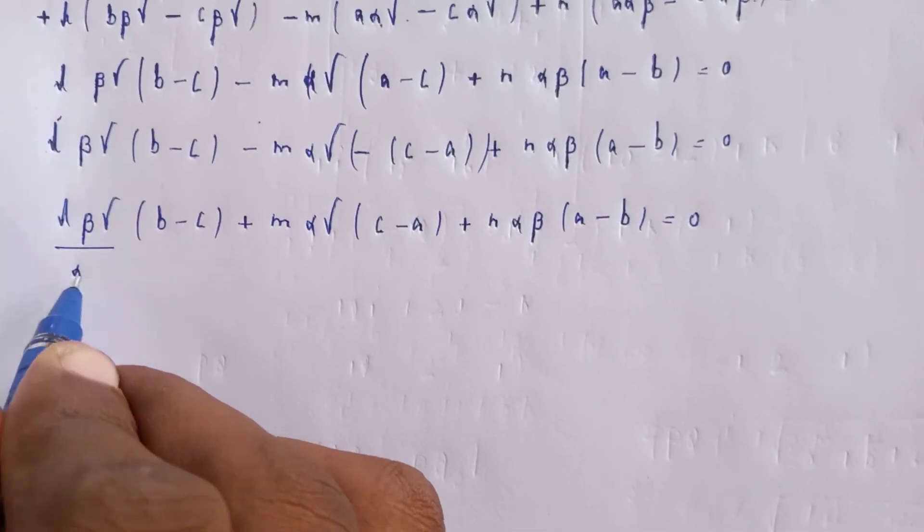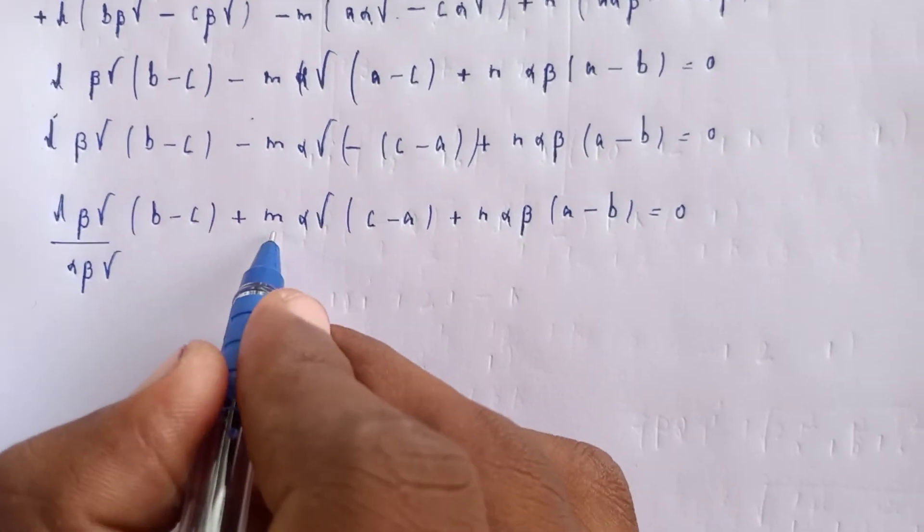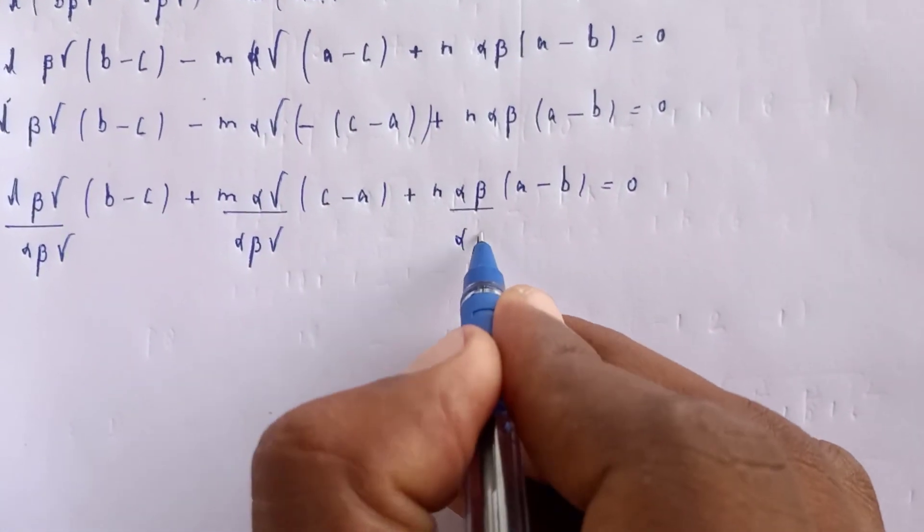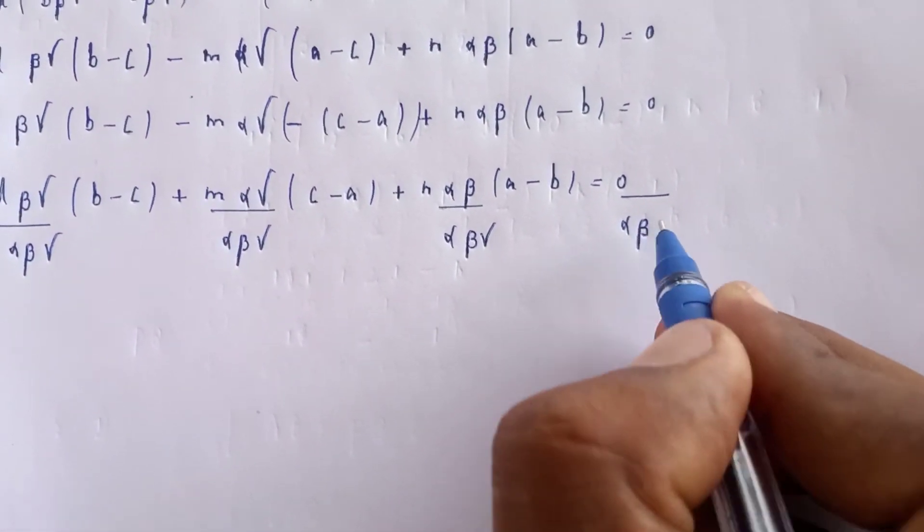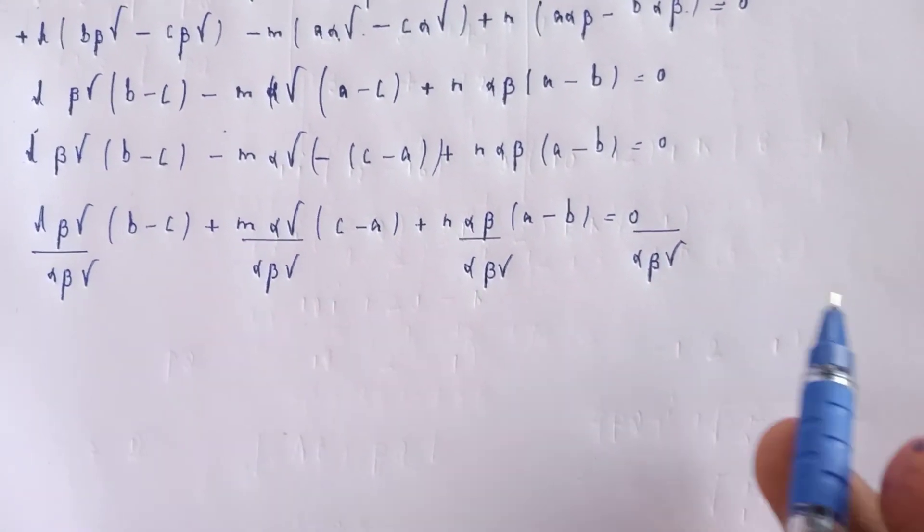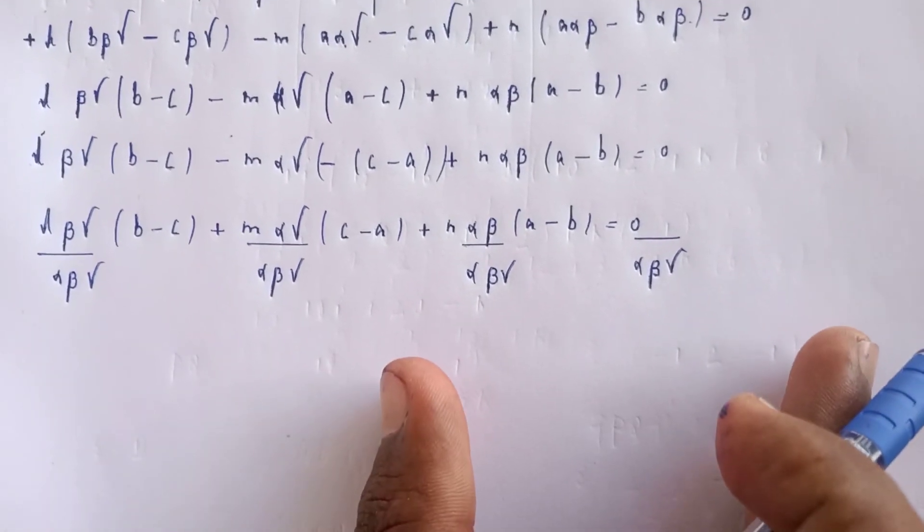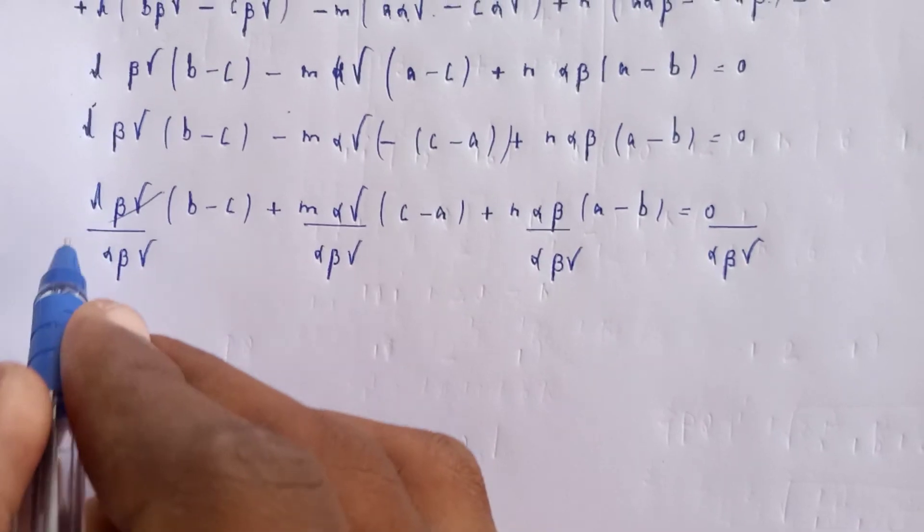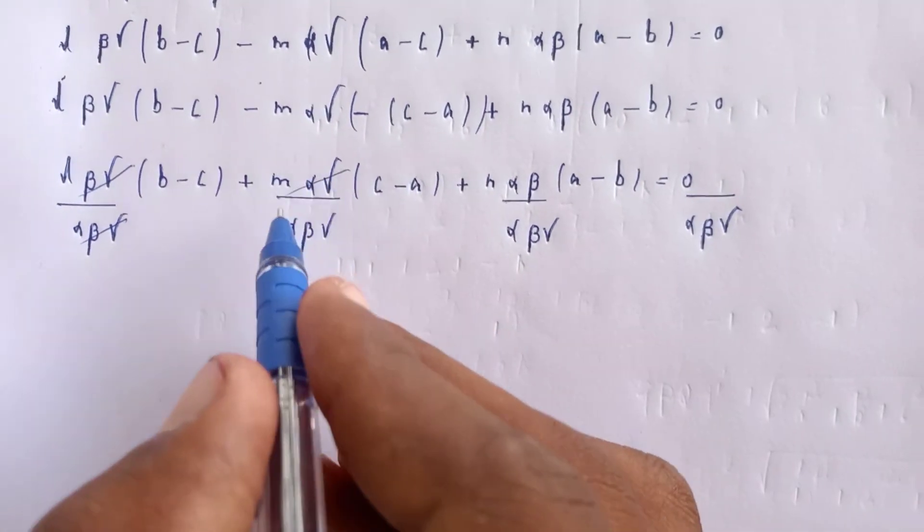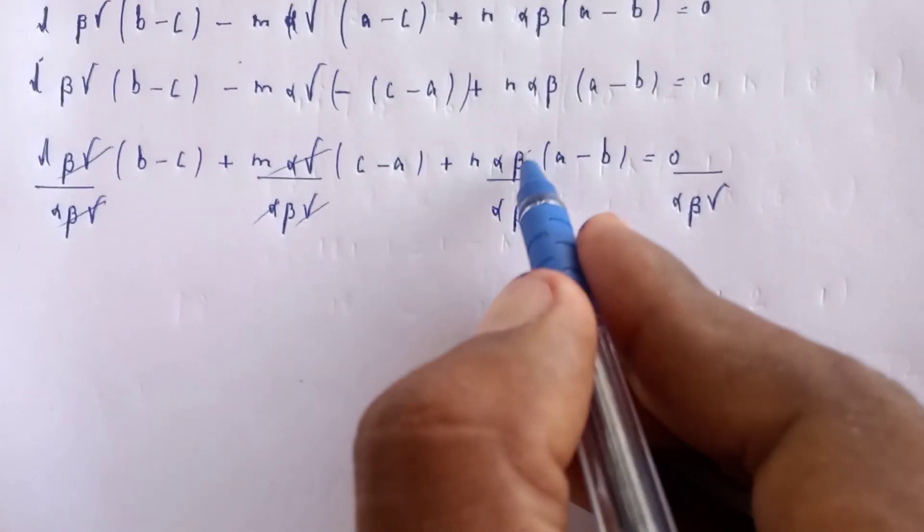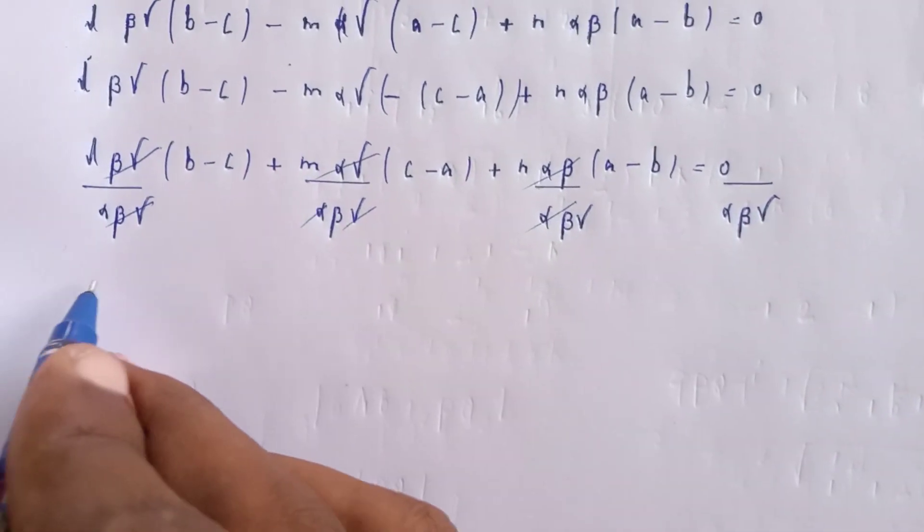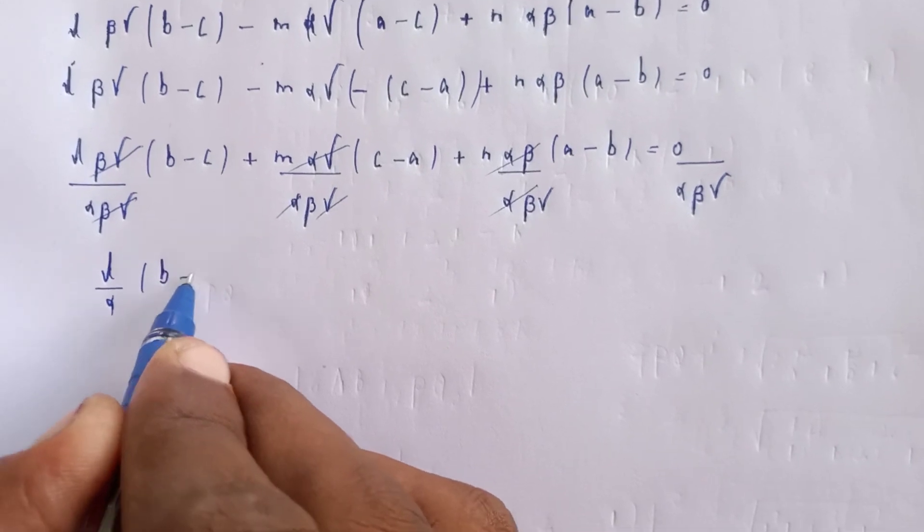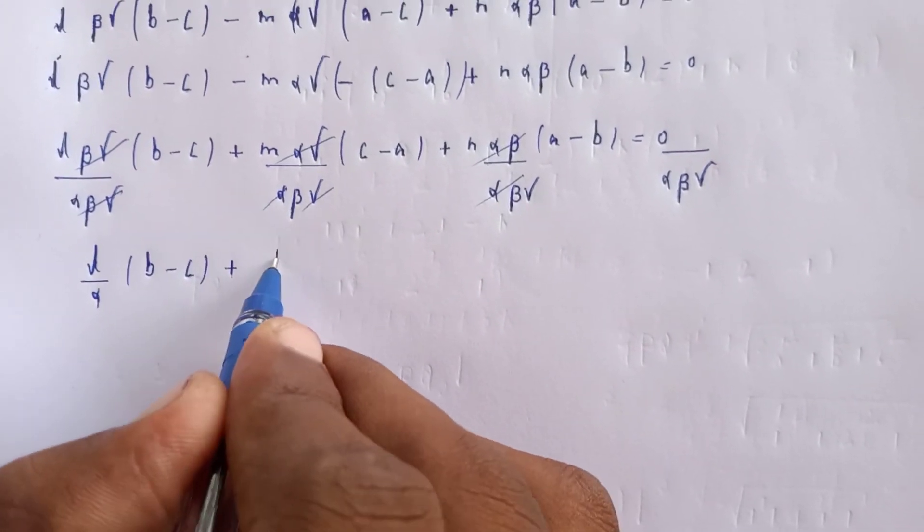Now divide both sides by α·β·γ. Dividing on both sides: the β·γ terms cancel, α·γ terms cancel, α·β terms cancel, giving us l/α times (b - c) plus m/β times (c - a) plus n/γ times (a - b).